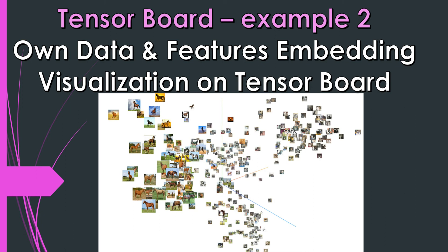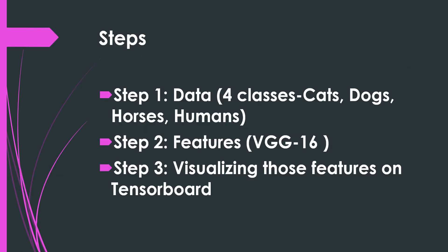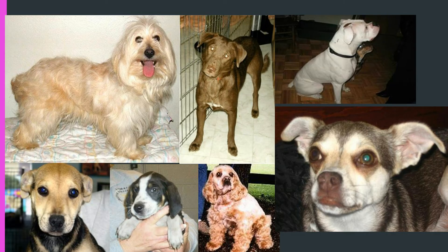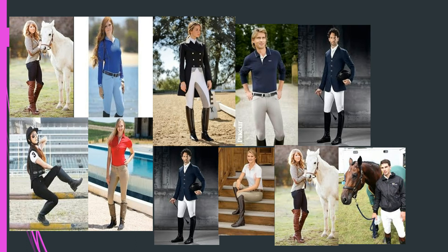This is how the embedding will look at the end. The steps involved: first you need to have data. In my case I have used data of cats, dogs, horses, and humans. For each class I have 100 samples — a few samples of cats, dogs, horses, and humans (actually horse riders). So in total I'm taking 400 samples for this example.